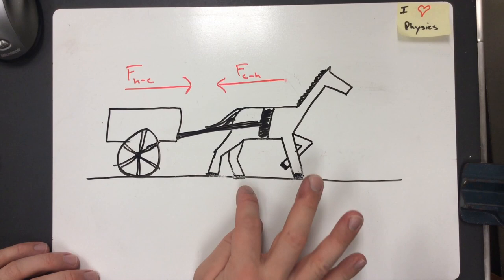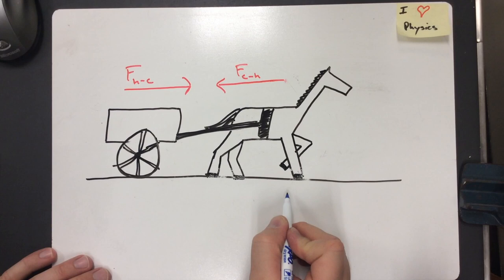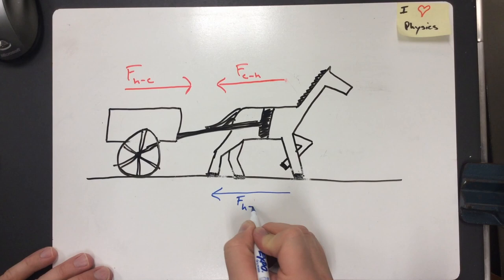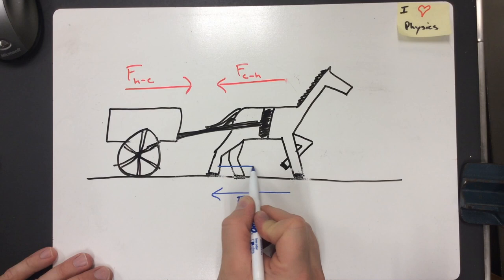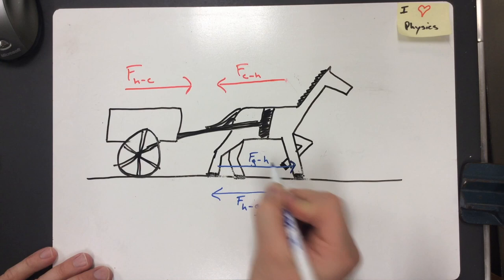Well, the horse has to be able to generate that force in the first place. And how it happens is down here on the ground. The horse actually takes and applies a force to the ground going backwards. So we say force of horse on the ground. And that's going to have to be equal and opposite with something else. The ground in turn pushes the horse forward. So we'd say force of ground on horse.